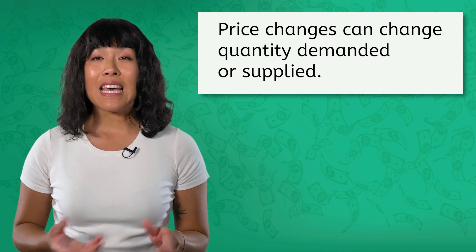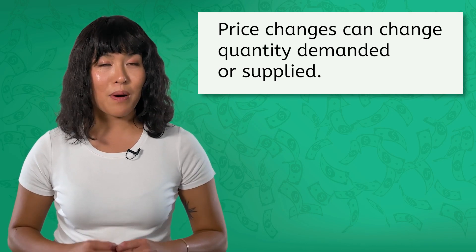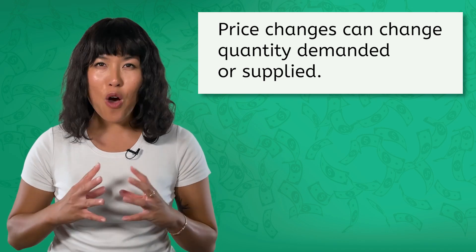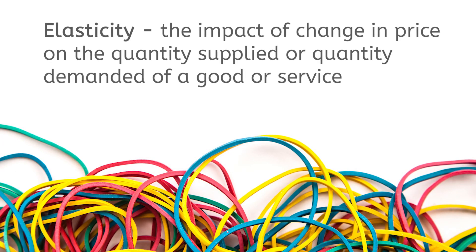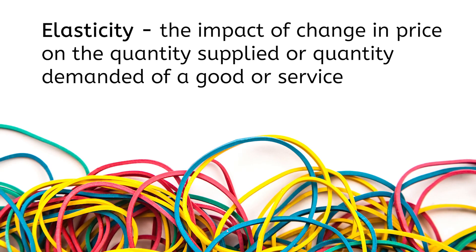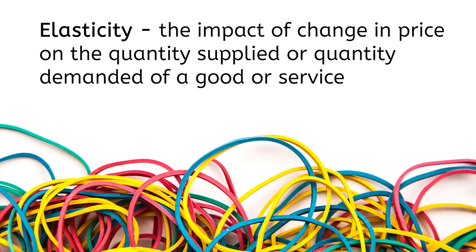When you hear the word elastic, you probably picture a rubber band. You can stretch it in any direction, and as long as you don't stretch it too far, it will pop back into its original shape once you let go. Well, demand and supply can be just like that rubber band, sometimes at least. And the thing that makes it stretch or contract? Price changes. We already knew that price changes can change quantity demanded or supplied, but economists like to measure just how much those quantities change in response to prices. Economists call this elasticity — the impact of change in price on the quantity supplied or quantity demanded of a good or service.